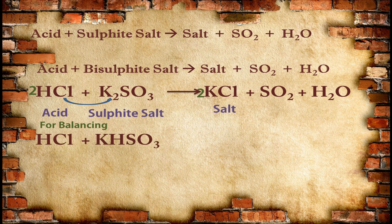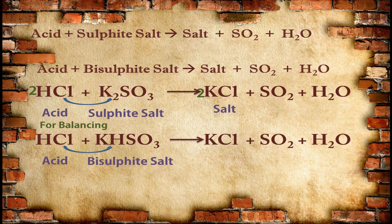Let's see the same reaction with bisulfite salt. When HCl acid reacts with potassium bisulfite, by the same method the formula of salt can be made, and the product will be the same: KCl + SO₂ + H₂O. KCl is the salt with the correct formula. If you check balancing here, no balancing is required.